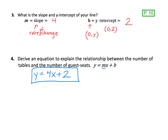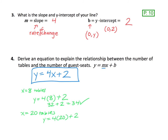Let's just test out our equation to make sure it works. Remember when we said if there were 8 tables, that was 34 people. If x equals 8 tables, let's take our equation and put 8 in there. So 4 times 8 plus 2 — 4 times 8 is 32, 32 plus 2 is 34, and that's exactly what we calculated in our table. If we have 20 tables, x is 20: 4 times 20 plus 2 is 80 plus 2, that's 82, which is exactly what we had before.